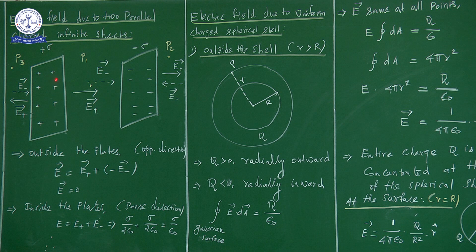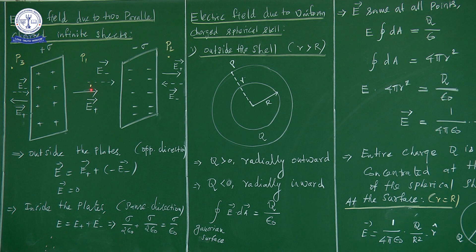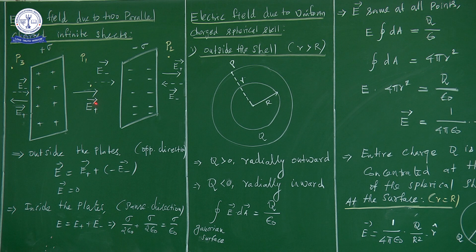For the positive charge, the electric field is outward. For the negative charge, the electric field is inward. Positive charge means electric field is E plus, and negative charge means electric field is E minus. Positive charge means electric field is in the outward direction, and negative charge means electric field is inward.